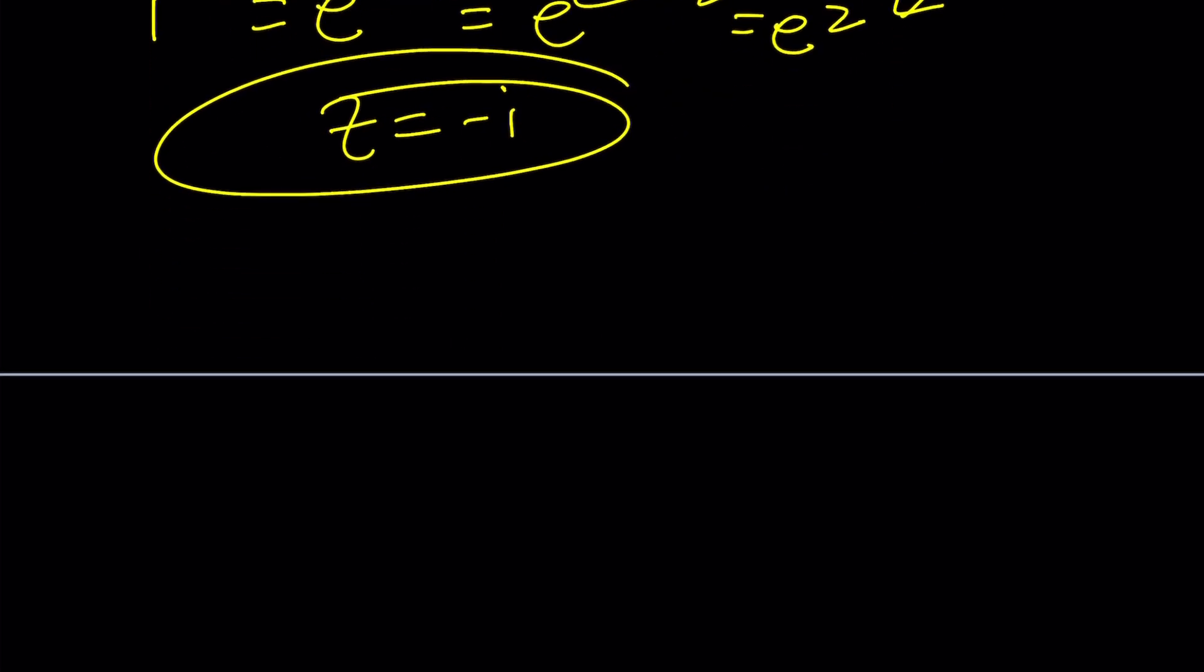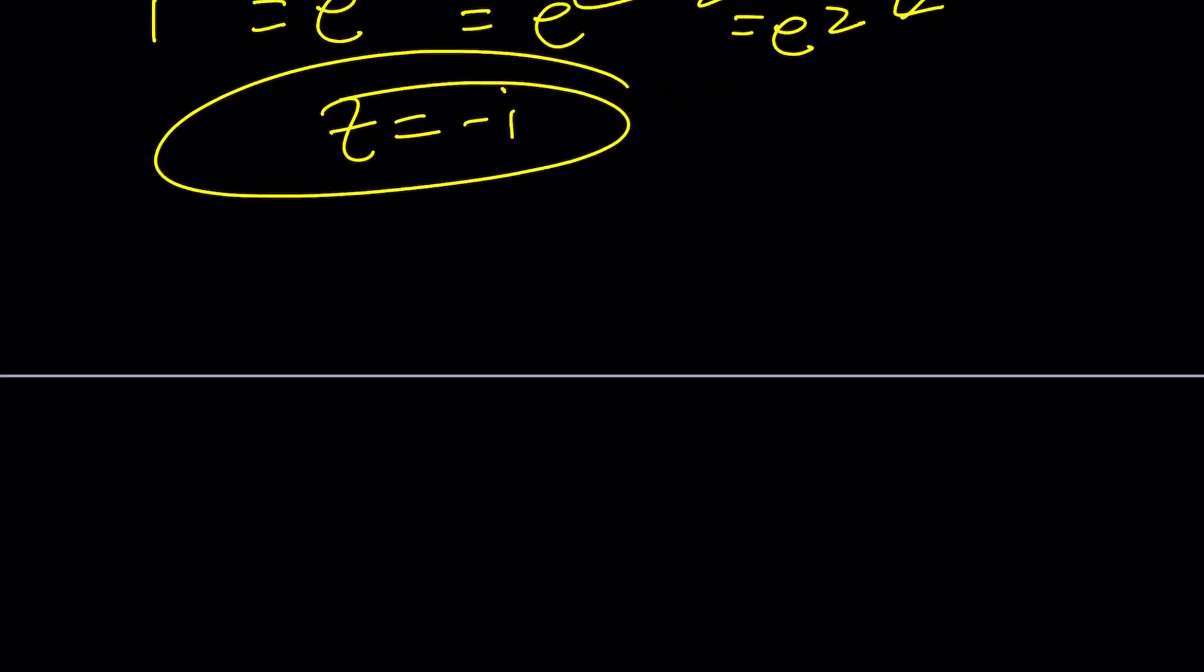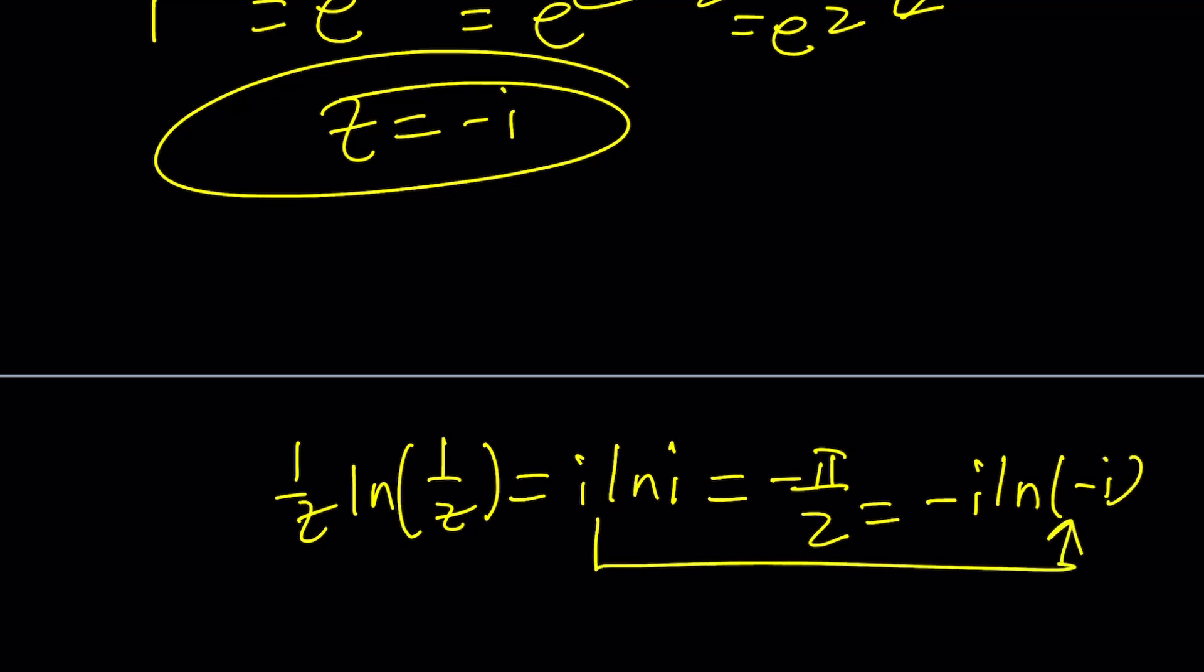Now, you can do a little bit of work to make this work and see if you can find Z equals I. One of the things that I want to tell you, though, when you solve this problem, when you get something like 1 over Z ln 1 over Z equals I ln I, from here, you're going to basically be getting negative pi over 2. But that's the same thing as negative I ln negative I. Here's the most important part of this. And hopefully, you can take it from there. And this brings us to the end of the studio.